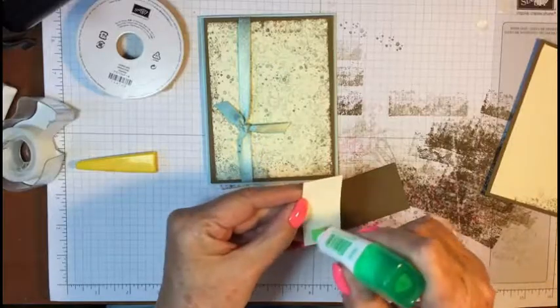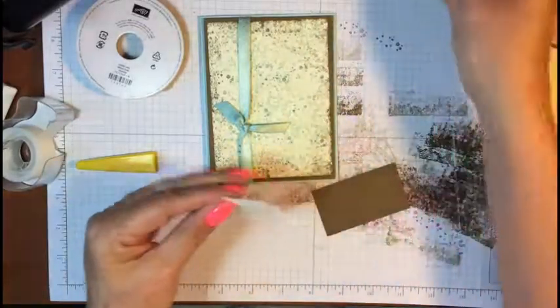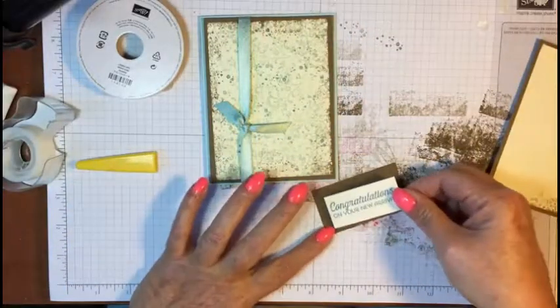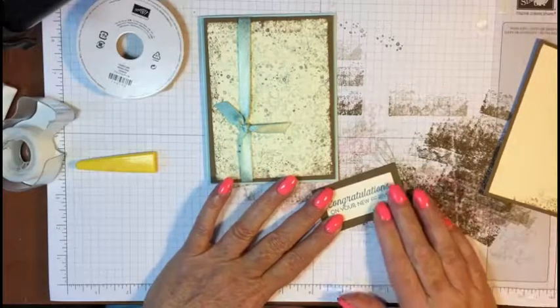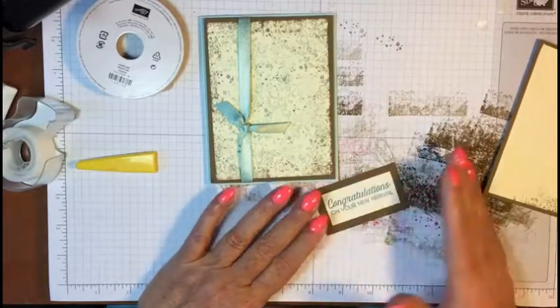Now you can ink around the edge of this if you want to, just to put a little bit more distress to it, I guess, but I kind of like it like that.